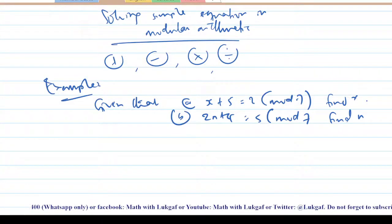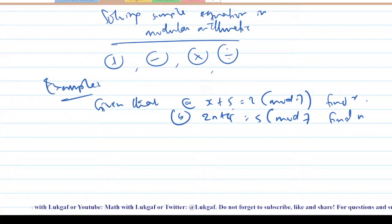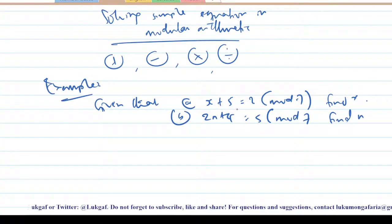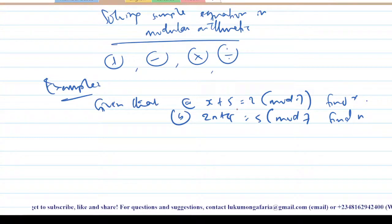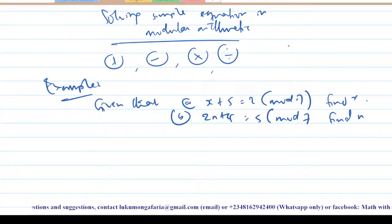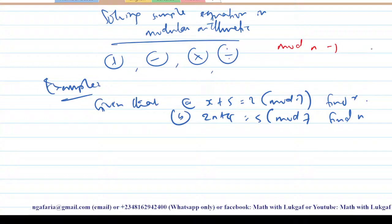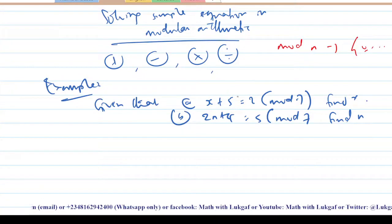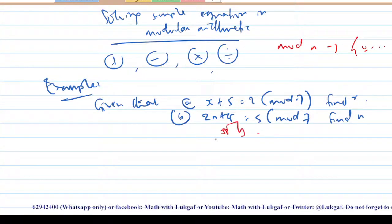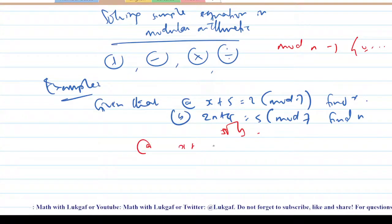What you have to be careful about is that you have to simplify it in the context of modular arithmetic. Don't forget that when you are working in modulo n, you must have numbers between zero and n minus one. Okay, let's try number one: x plus 5 is congruent to 2 modulo 7.